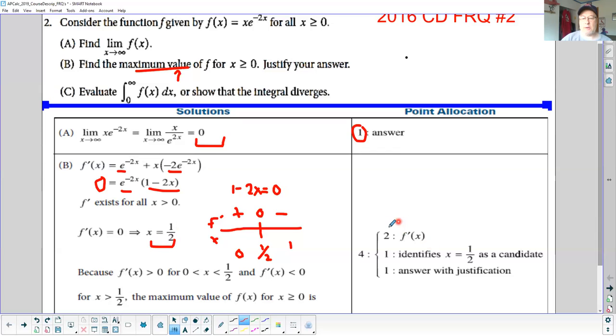You get two points for your first derivative. I'll probably give you one point if you made a simple mistake, but if you didn't know to do product rule, you're not getting any points. If you didn't factor this out and still got this step, you're still getting two points. You have to identify that one half is a candidate.